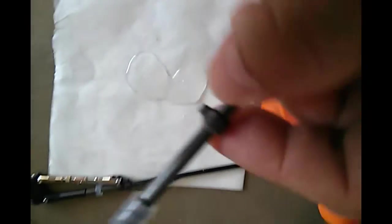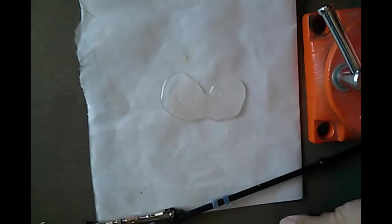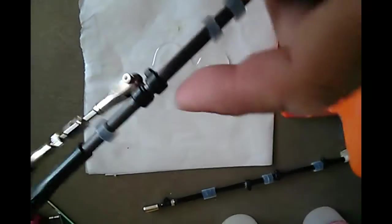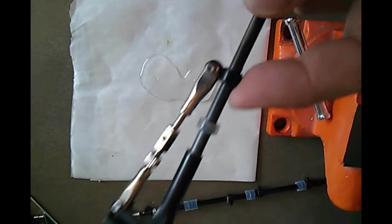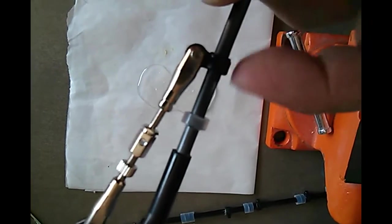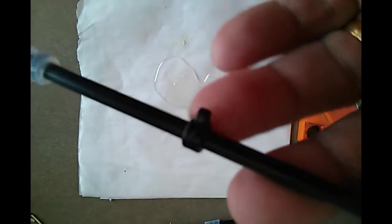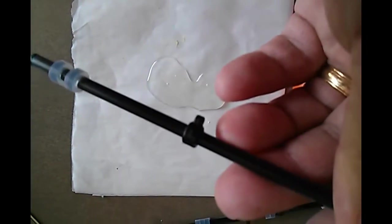So on the jib, it's where the attachment point is there. And on the main, we're going to do where this little metal boom vang connects onto that area, as well as where the sheeting line comes out to.